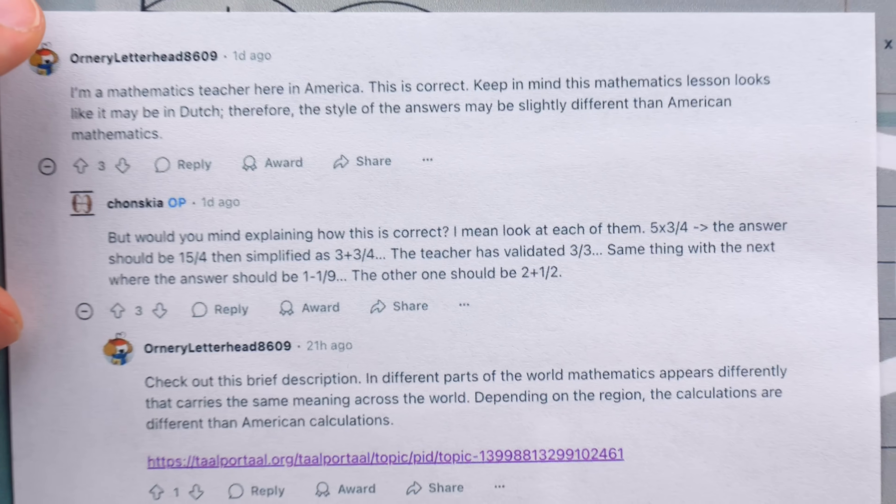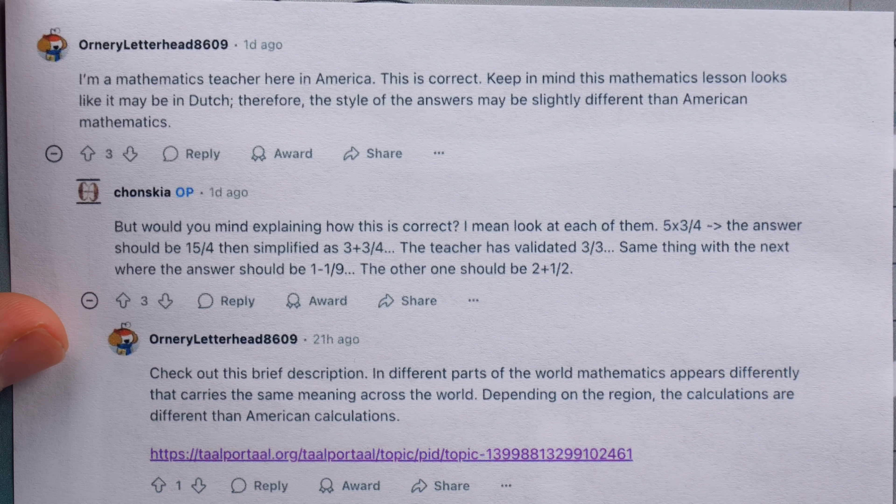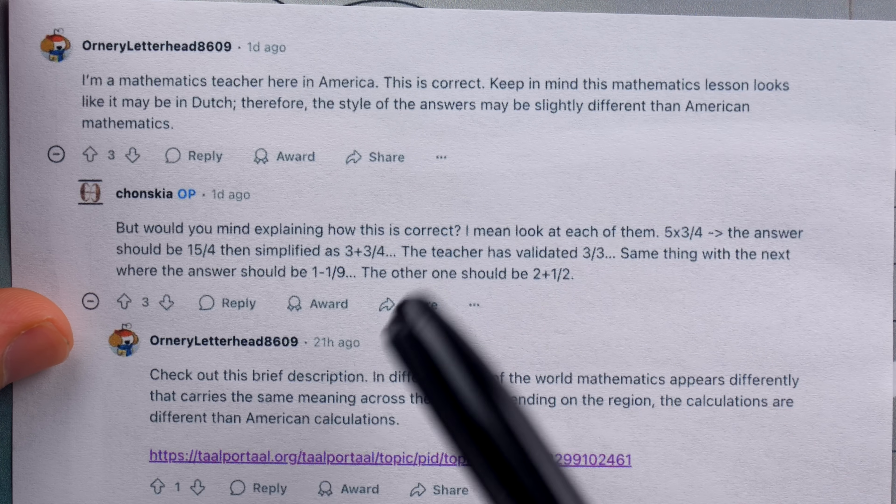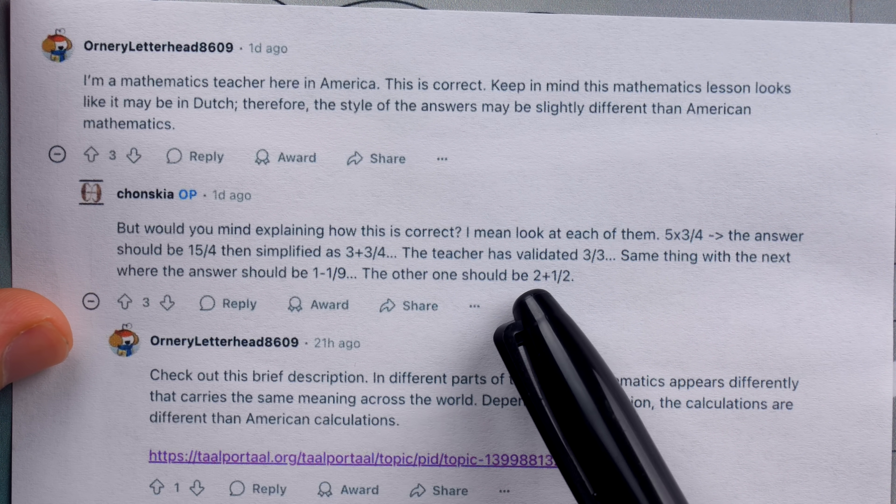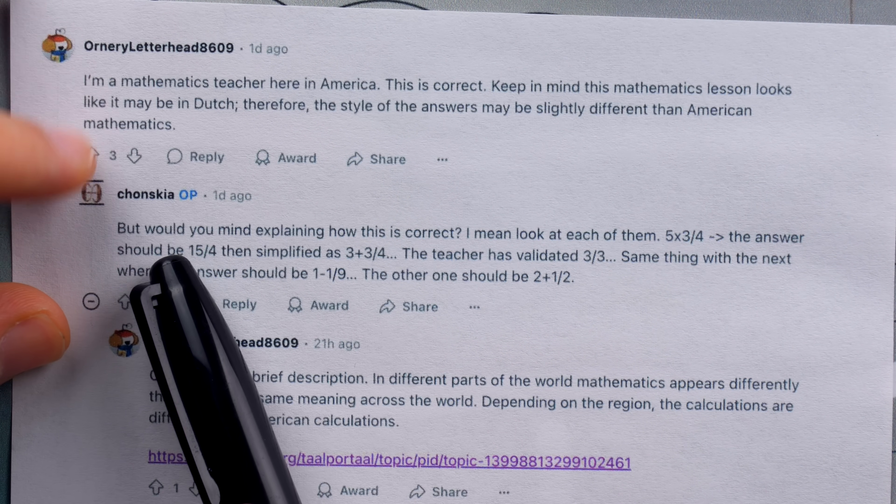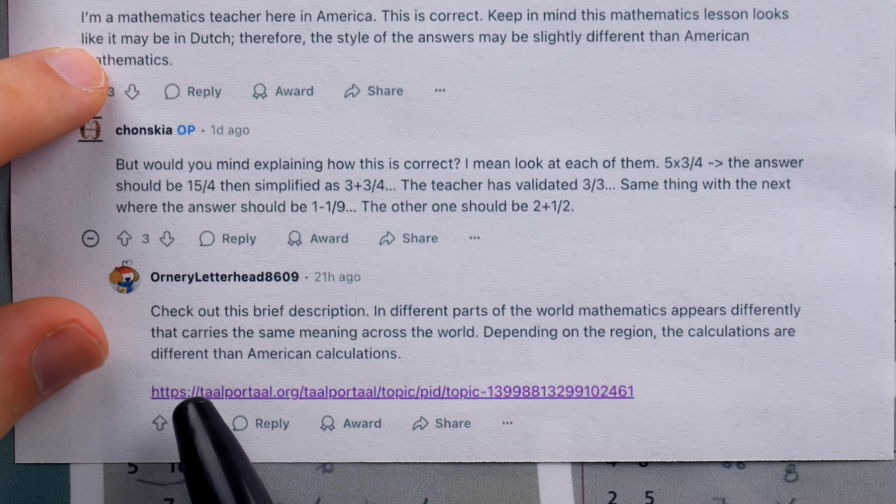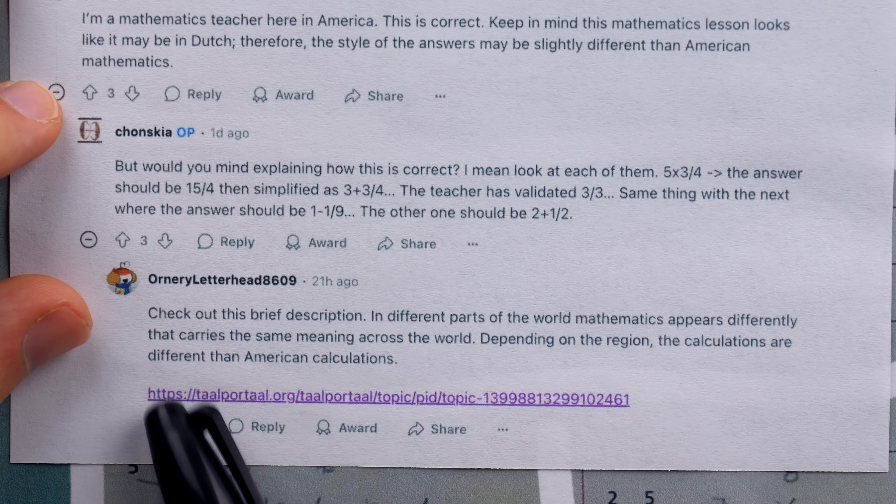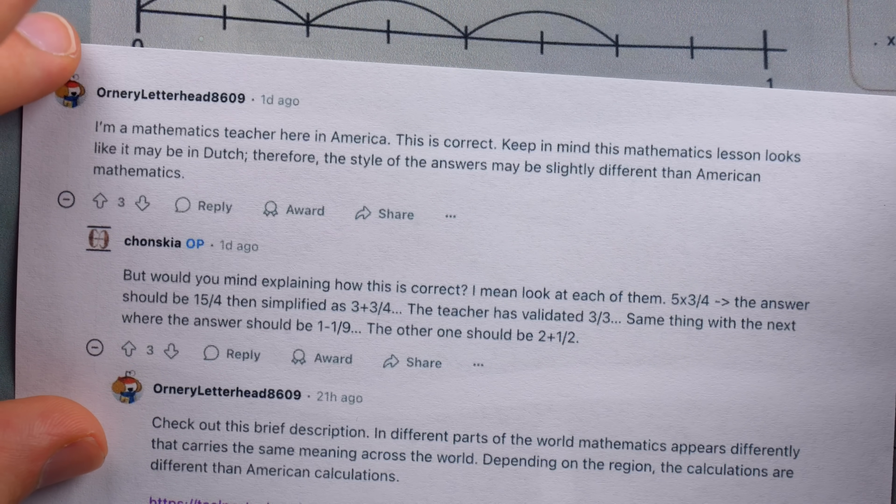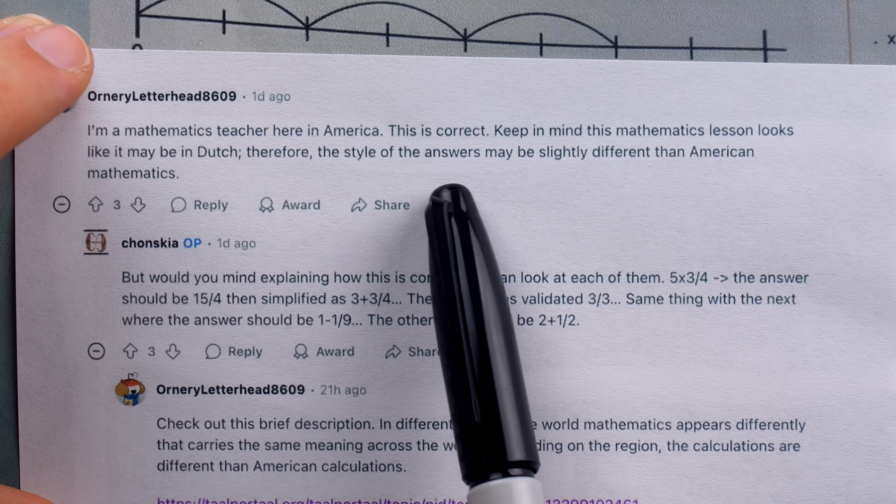Ornery Letterhead says, I'm a mathematics teacher here in America. This is correct. Keep in mind, this mathematics lesson looks like it may be in Dutch. Therefore, the style of the answers may be slightly different than American mathematics. But OP is Dutch and is the recipient or parent of the recipient of this assignment. He says, but would you mind explaining how this is correct? Look at each of them. 5 times 3 fourths. The answer should be 15 fourths, then simplified as 3 plus 3 fourths. The teacher has validated 3 over 3. Ornery Letterhead says to check out this link, seeing how in different parts of the world, mathematics appears differently. I looked at this link, I didn't see anything compellingly relevant. Just a very strange comment here, because Ornery Letterhead suggests certainty. This is correct. But their justification is just ignorance. That they're in America, and since this is in Dutch, the style of answers might be slightly different. I just don't buy it.